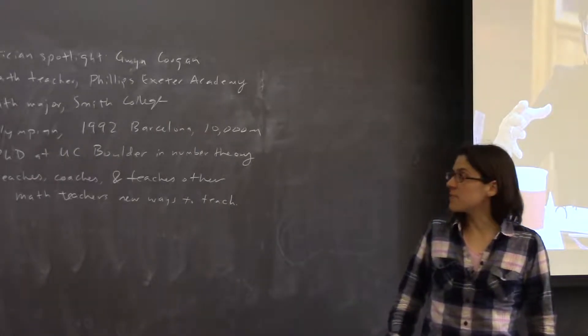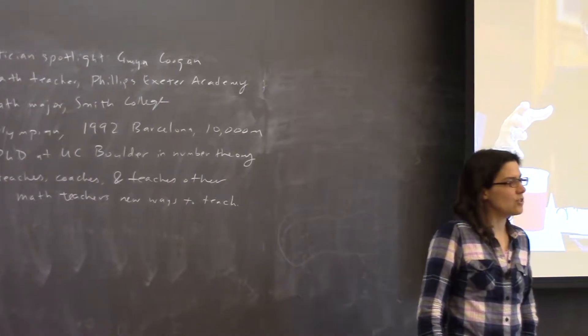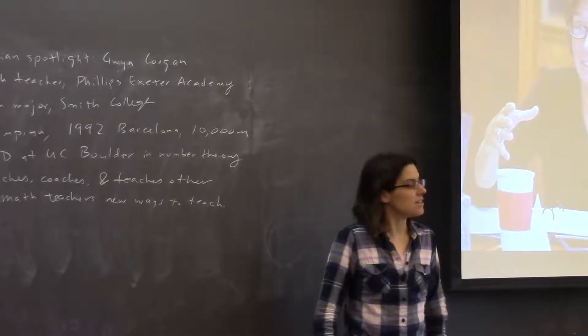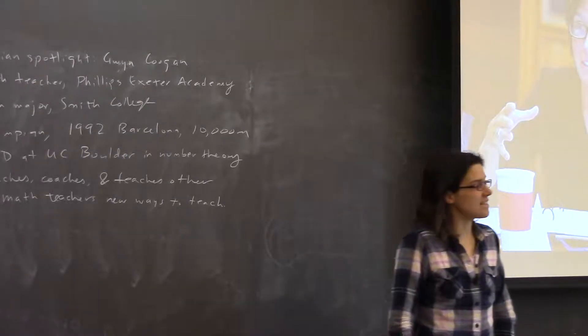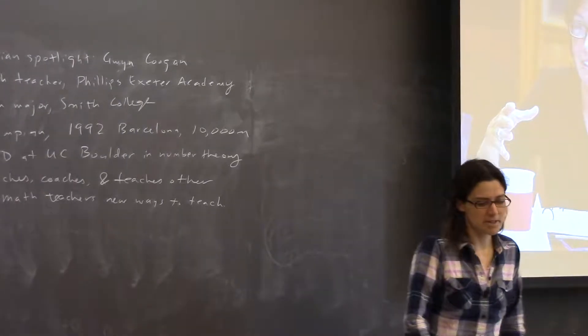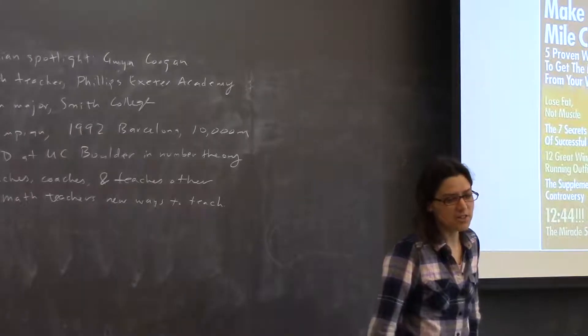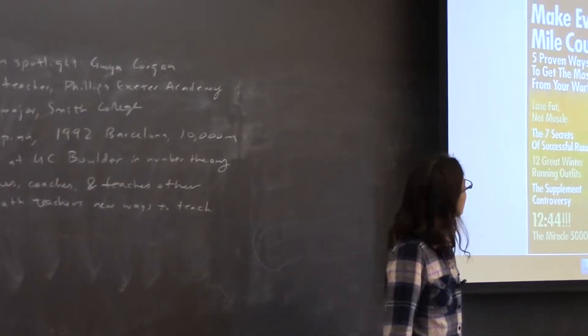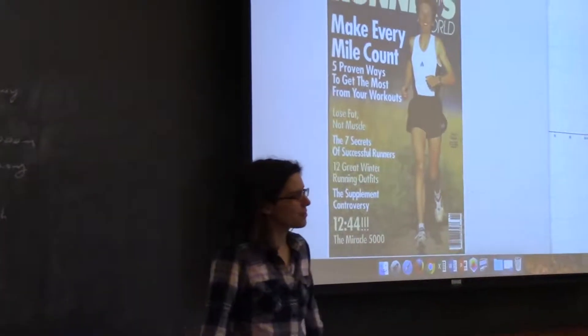She kept running and got really fast, so she's an Olympian. She represented the United States in 1992 in Barcelona. Here's a picture from that era on the cover of Runner's World.